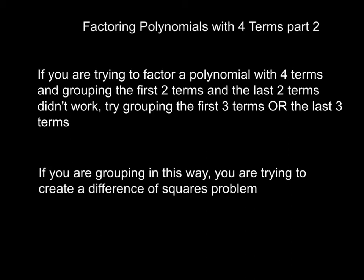Hopefully you have some kind of flow chart to help you with deciding how to attack a factoring problem. In one of the previous videos we talked about if there were four terms, your first option would be to group two terms — the first two terms and the second two terms — and see if there was any greatest common factor out of those groupings that you could take out and continue on that process until you get it factored down.